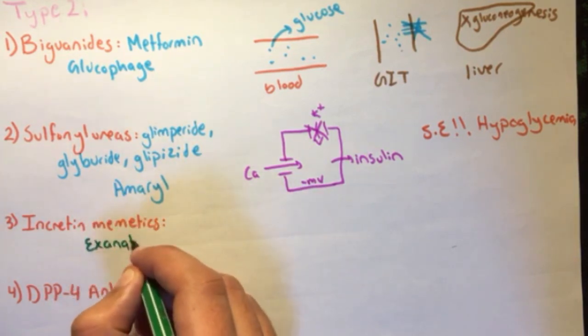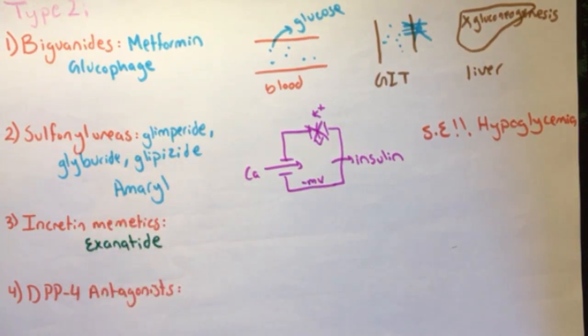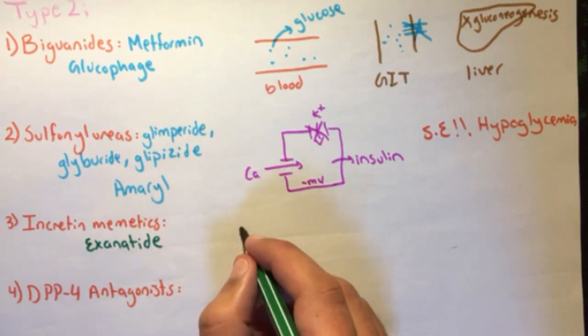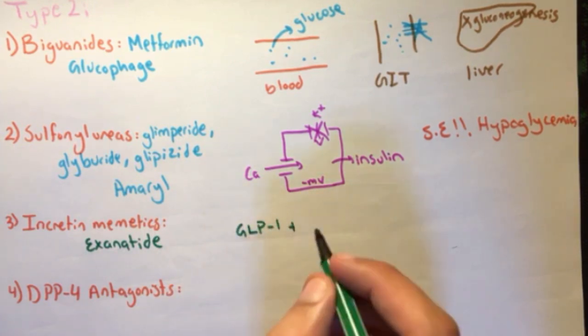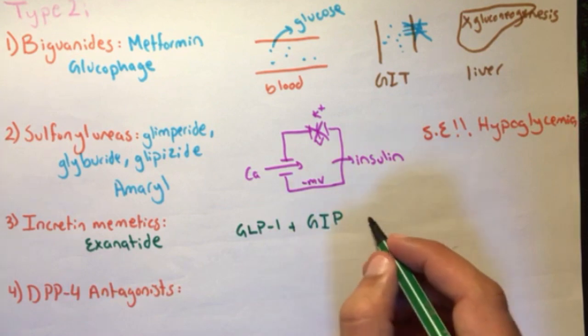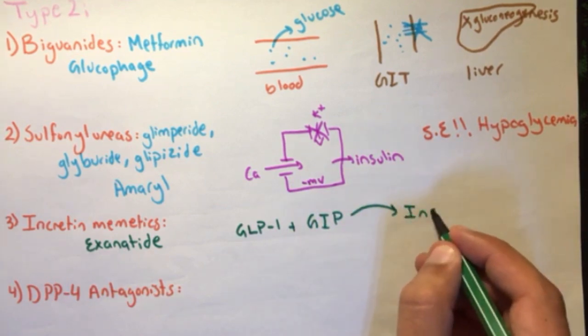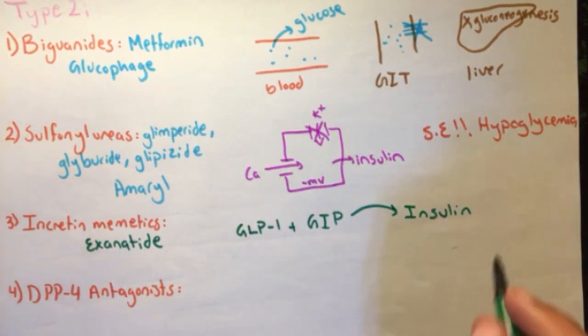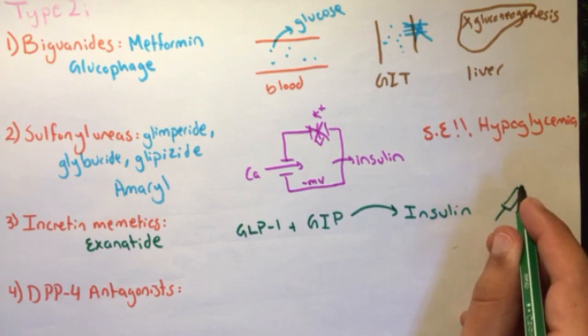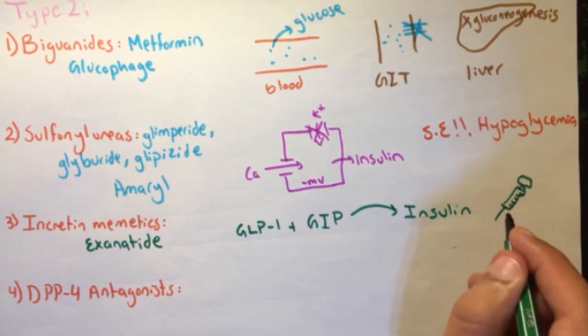Incretin mimetics is the third class of drugs. They are also known as exenatide. They increase the incretin effect, which is when taking glucose, the gastrointestinal system will stimulate the release of products called GLP-1 and GIP, which increase insulin. They are injectable, and their off-label use is weight loss.